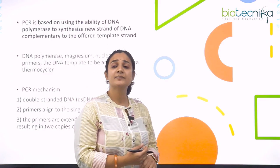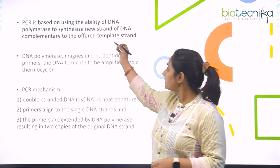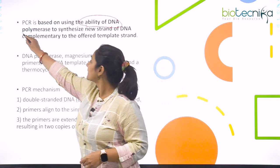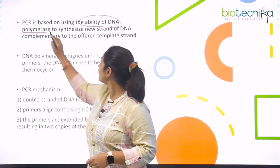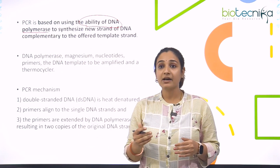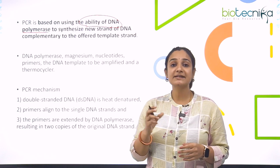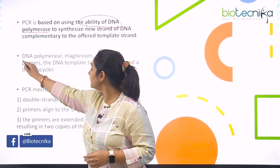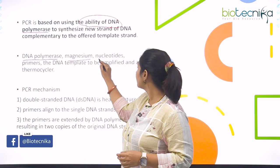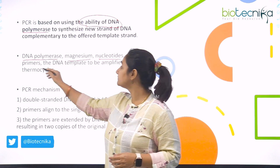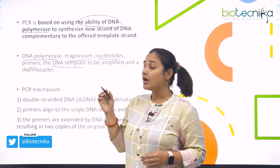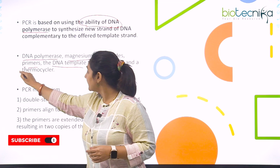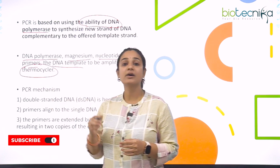So what exactly do we do in PCR? PCR is based on the ability of DNA polymerase to synthesize a new strand of DNA that will be complementary to the original DNA strand. For polymerase chain reaction to take place, we will need DNA polymerase, magnesium, various nucleotides, primers, a DNA template or the original strand of the DNA that we want replicated, and we also need a thermocycler or a PCR machine.